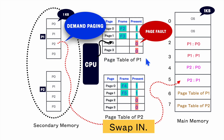it will look in the page table of process P1 and see that the present bit for page 2 is 0, which indicates that this page is not loaded into the main memory. This will trigger a trap called a page fault, which will demand page 2 to be loaded first into the main memory.